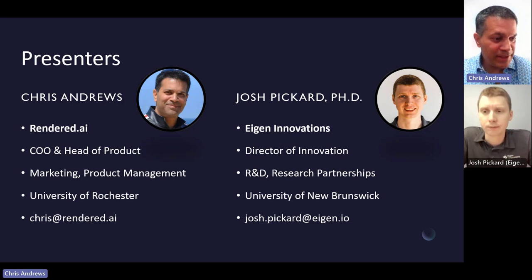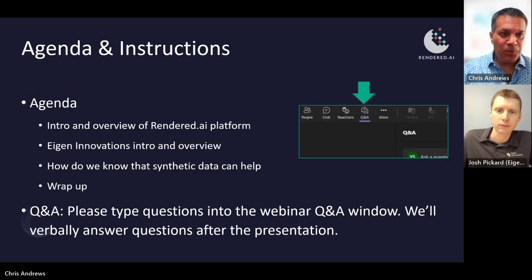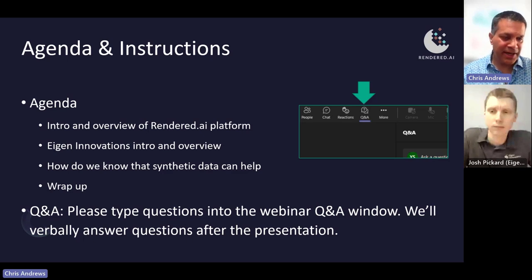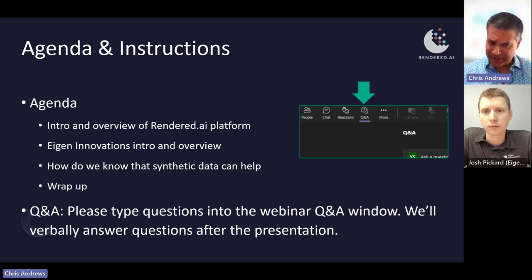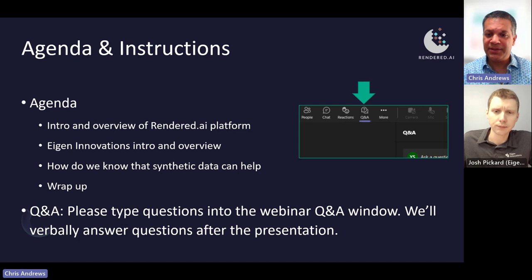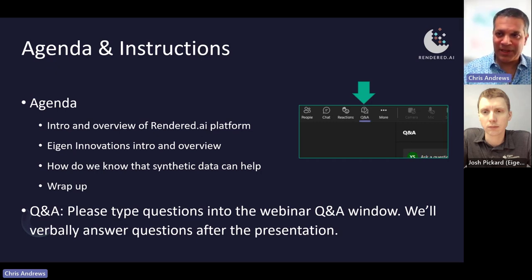We are excited to be able to collaborate with Eigen and Josh to put on this webinar, and we're going to focus today on improving scalable machine vision in manufacturing. I'm going to focus first on an intro and overview of Rendered AI. We're going to give Josh plenty of time to talk about Eigen Innovations and their work in using synthetic data in machine vision, and then we're going to wrap up with some Q&A. Please type your questions into the webinar Q&A window. We're going to shoot for about 30-ish minutes in content and then save plenty of time for Q&A.